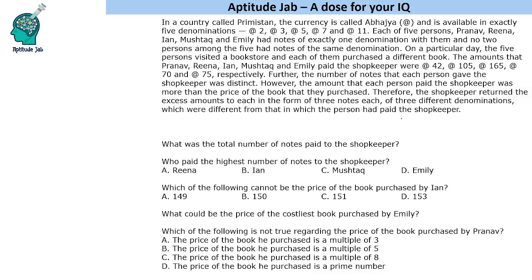Each person paid more than the price of the book to the shopkeeper. As a result, the shopkeeper returned 3 notes to each one of them, and these 3 notes were of different denominations, which was not the denomination in which they had paid the shopkeeper. This is quite a complex problem related to numbers.